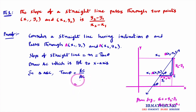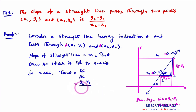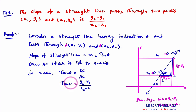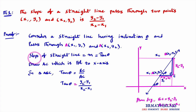So BC is y2 minus y1 and AC is x2 minus x1. Therefore tan theta equals BC divided by AC, which is y2 minus y1 divided by x2 minus x1. Since theta is the inclination, slope of the straight line equals tan theta.